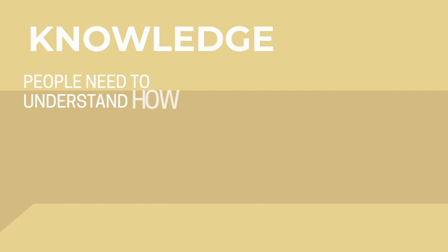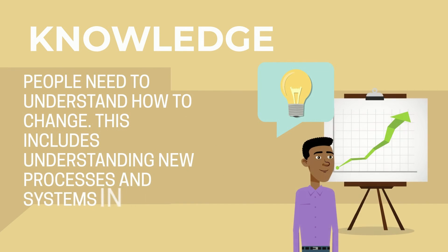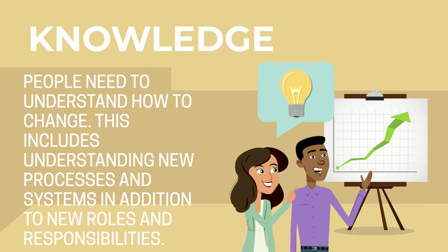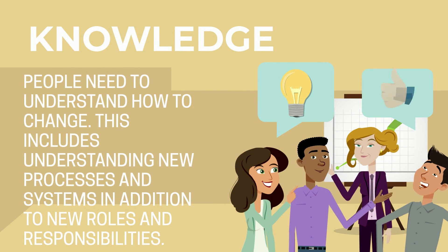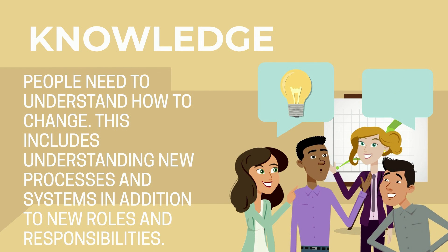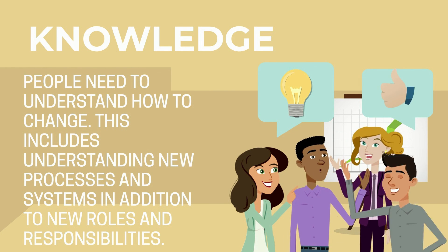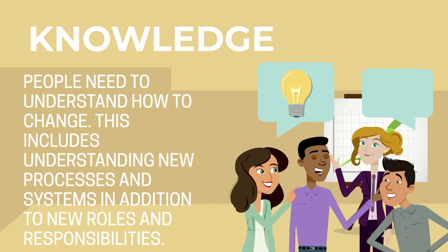Knowledge: people need to understand how to change. This includes understanding new processes and systems in addition to new roles and responsibilities. Knowledge can be imparted through training and education.